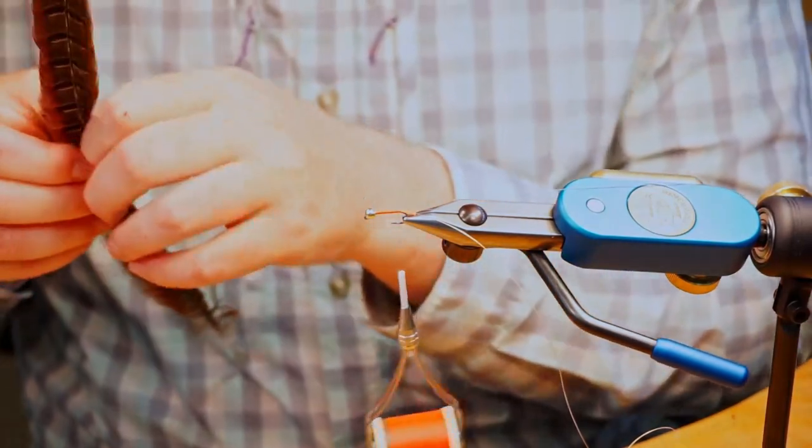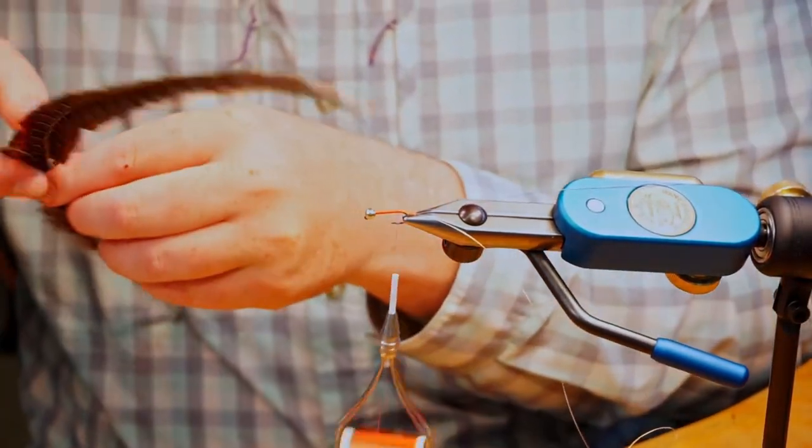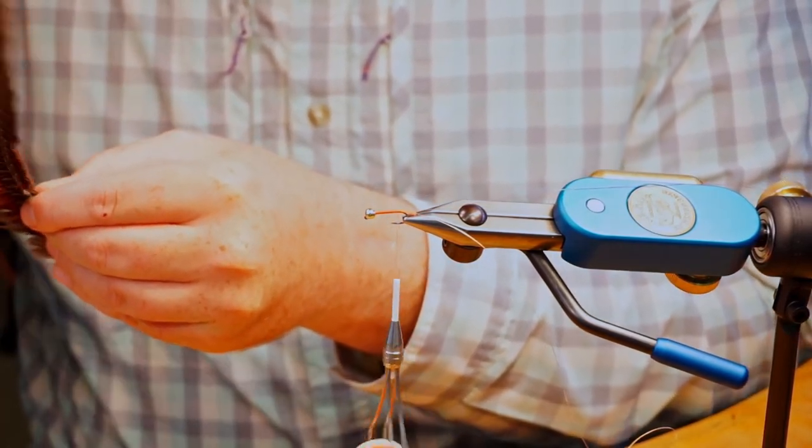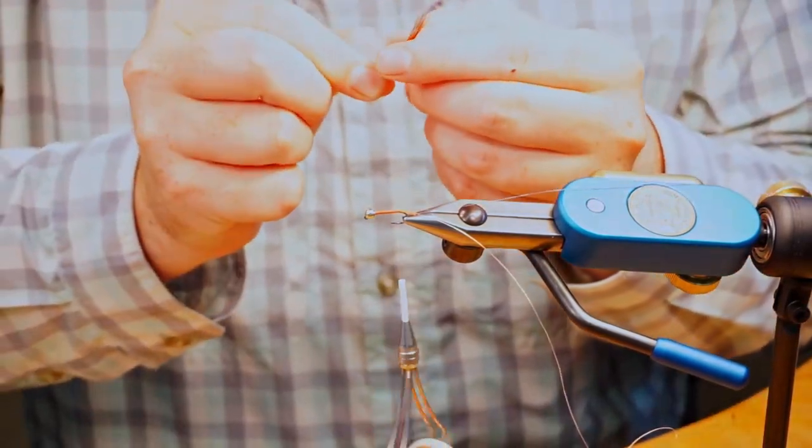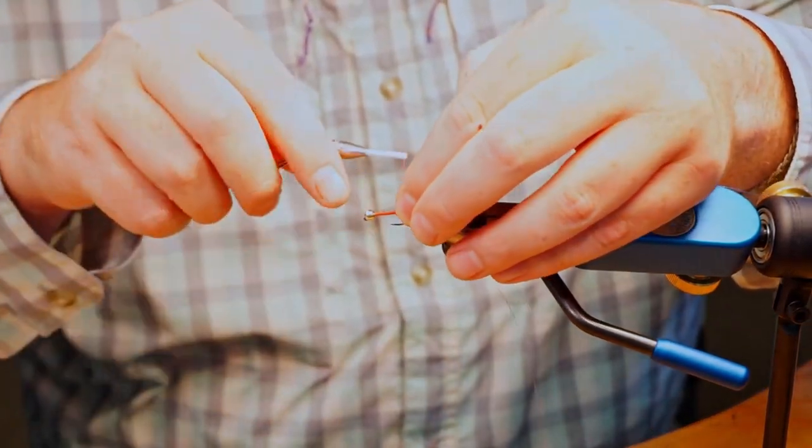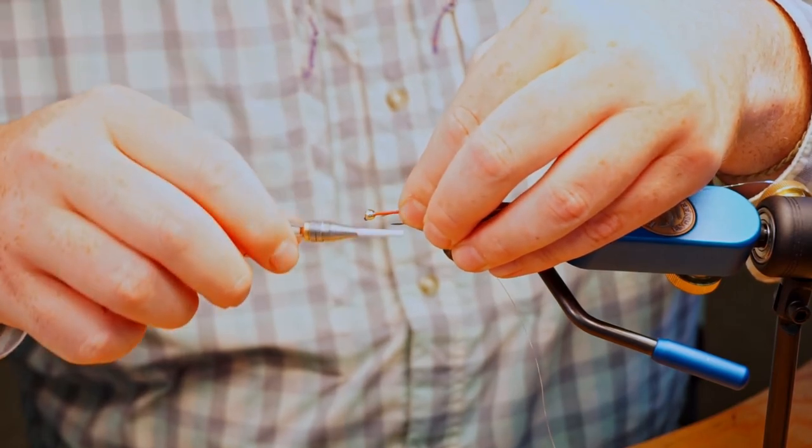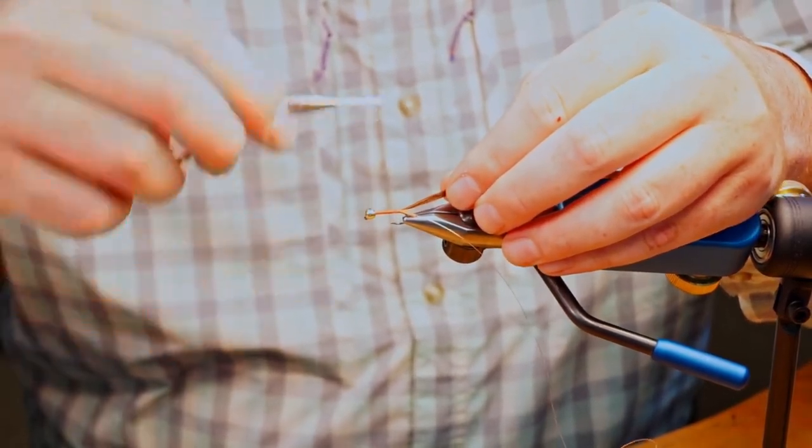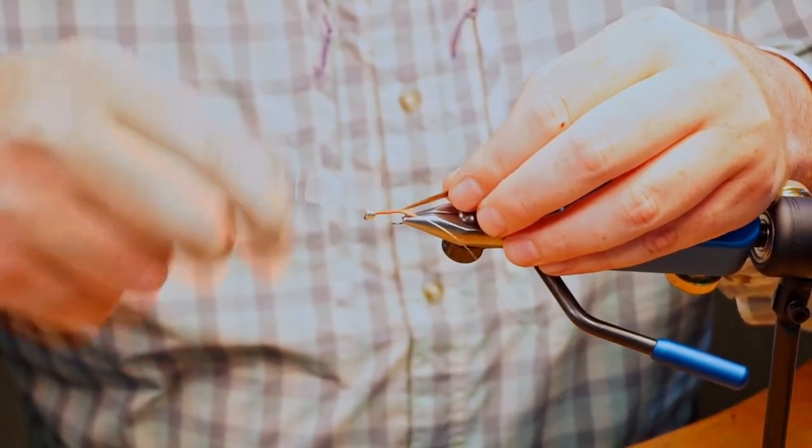And then pheasant tail for the body here. I'm just going to take whatever, six, seven, eight fibers. I like to go a little bit more just in case some of them break. We'll kind of square those up. I don't like to trim the butts off of them. I like to just tie them a little bit longer. Soft wrap forward.